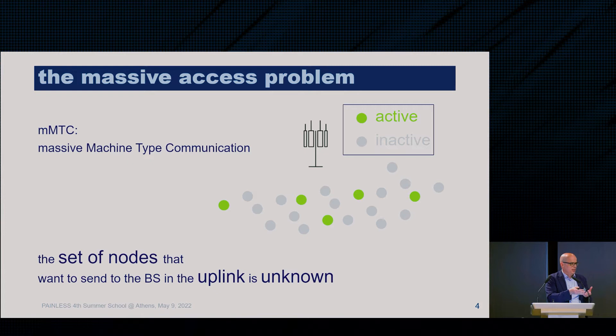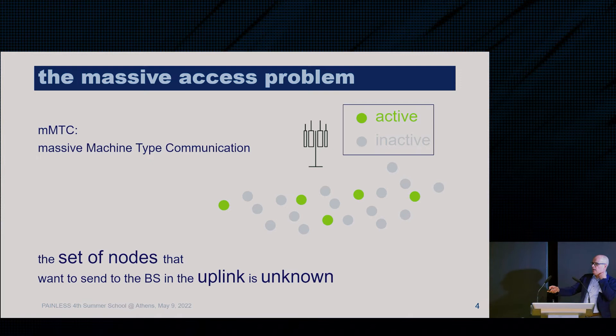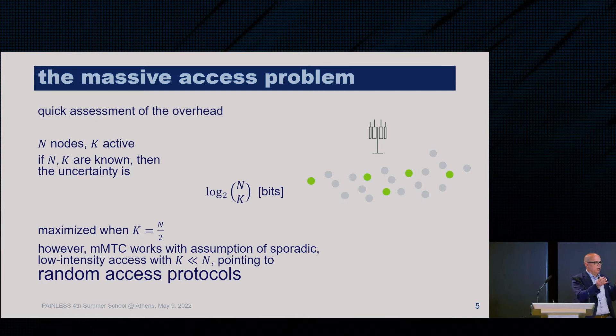Because the nodes are sporadically active, we do not know who is active, so we have an unknown subset out of a large set of devices. Solving this problem requires a certain overhead, because you have to figure out who is active, then schedule them, then they transmit. This was all part of classical Aloha Random Access protocols.